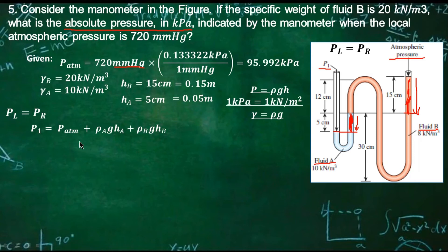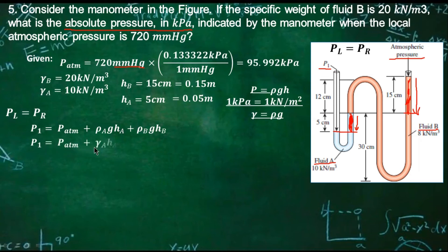Pressure A equals density times gravity times height, and same for pressure B. Since we are given specific weight — which equals density times gravity — we substitute that into the equation. So P sub 1 equals atmospheric pressure plus specific weight of A times height of A, plus specific weight of B times height of B.